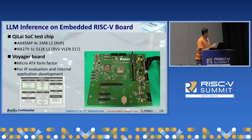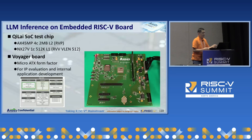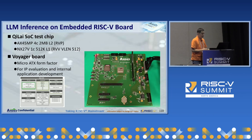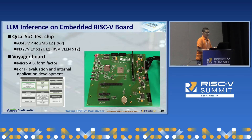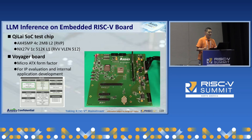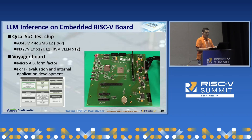Let's introduce the RISC-V development board we are using. The photo on the right side shows the Andy's Voyager development board, which is equipped with a Qi-Lite test chip. This chip includes a 4-core X45MP that supports the RVP draft standard, as well as an X27V core that supports RVB. It is important to know that X45MP is the previous generation application processor from Andy's Technology. It has been licensed many times, and this board is mainly used for IP evaluation and internal application development. This board is not for sale as a commercial product.